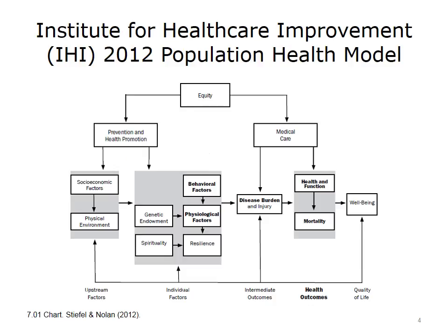In 2012, the Institute for Health Care Improvement (IHI) published the Population Health Model. It was adapted for the Affordable Care Act by the Academy Health Organization, and is represented as a framework of interventions on the bottom, and factors that lead to effective interventions. In determining health interventions for population health, we consider equity as a major contributing factor in two domains: prevention and health promotion, and medical care.